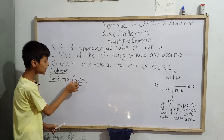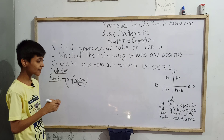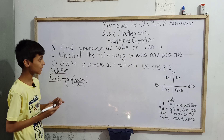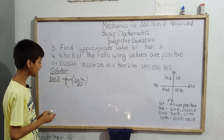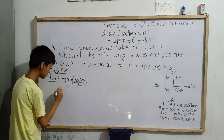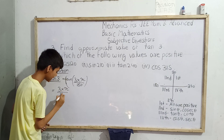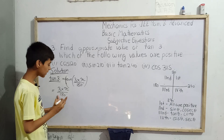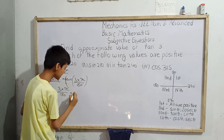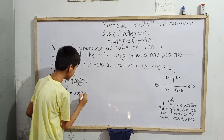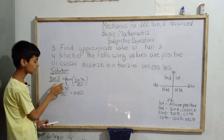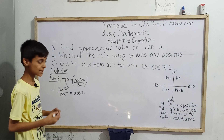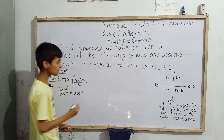Now tan(3π/180) is approximately equal to simply 3π/180, using the small angle approximation. Evaluating this gives us 0.052. So the answer is that tan(3°) is approximately equal to 0.052.